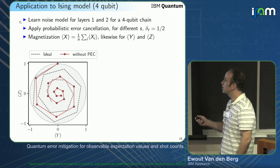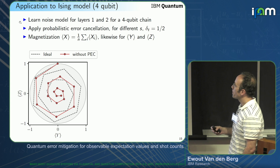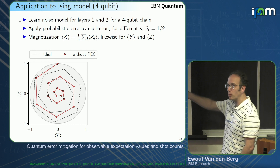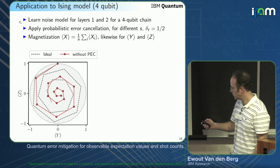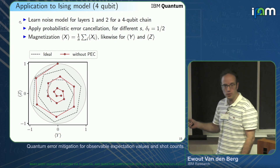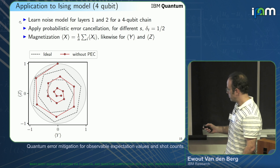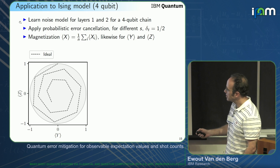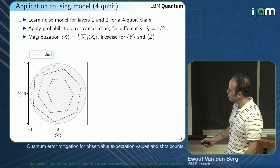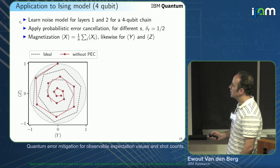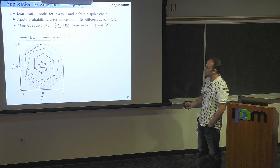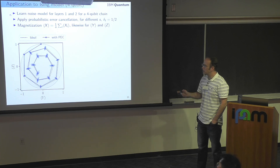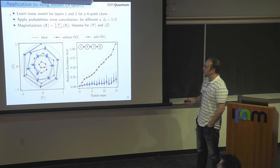We just have to learn the noise for two different layers, then apply PEC noise cancellation for different values of s — the number of terms in the Trotter expansion — for a fixed time. We look at the magnetization, which is the average of Pauli X, Y, or Z. The ideal result shows a spiral in the ⟨Y⟩ versus ⟨Z⟩ plane. Without PEC, you get a spiral too, but it spirals in very fast. With PEC, you follow the original spiral much more closely.